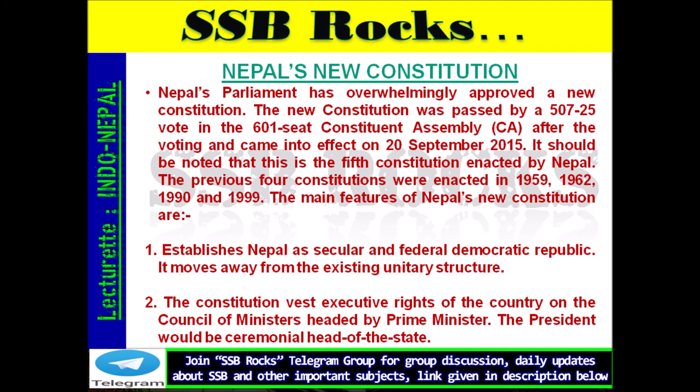Nepal's New Constitution: Nepal's parliament has overwhelmingly approved a new constitution, passed by a 507-25 vote in the 601-seat Constituent Assembly (CA), coming into effect on 20 September 2015. This is the fifth constitution enacted by Nepal. The previous four constitutions were enacted in 1959, 1962, 1990, and 1999.